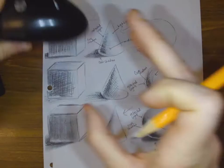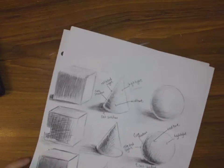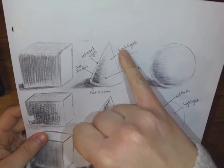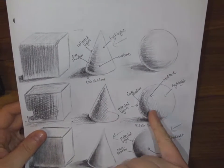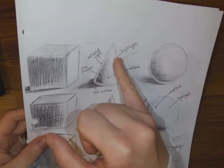Alright, so if we look at this handout, basically on one side I have some that are labeled so that you can see this is the highlight, the middle tone. The middle tone is usually the natural color of the form, your core shadow is the furthest area from the light source, so obviously it's going to be in the dark.